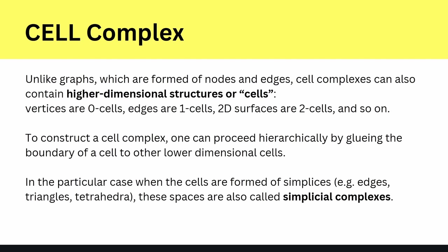Unlike graphs, which are formed of nodes and edges, cell complexes can also contain higher dimensional structures — what we call in general cells. Vertices are zero-cells, edges are one-cells, surface areas are two-cells, and so on. To construct a cell complex, one can proceed hierarchically by gluing the boundary of a cell to other lower dimensional cells. When the cells are formed from simplices — where the base is a triangle or tetrahedron — those are called simplicial complexes. Please remember: simplicial complexes for triangular structures, or cell complex in the more general case.